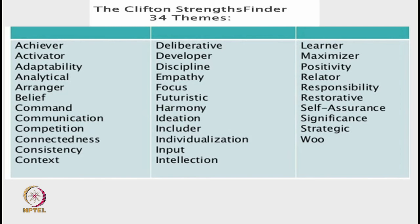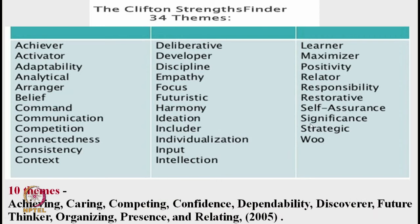The 34 themes per Clifton Strengths Finders, which are highly connected with success, are: achievers, activators, adaptability, analytic, arranger, belief, command, communication, competition, connectedness, consistency, context, deliberative, developer, discipline, empathy, focus, futuristic, harmony, ideation, includer, individualization, input, intellection, learner, maximizer, positivity, relator, responsibility, restorative, self-assurance, significance, strategy, and woe.